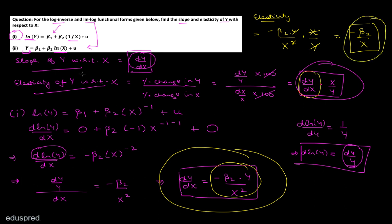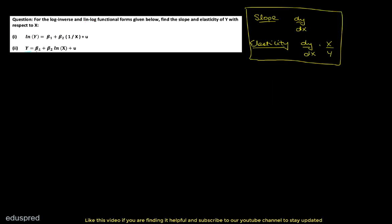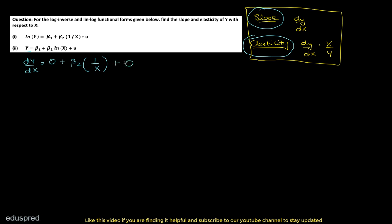Now let's do the same calculation for the second model: y = β₁ + β₂·log(x) + u. Differentiating with respect to x: the differentiation of β₁ is zero, then +β₂, and the differentiation of log(x) with respect to x is 1/x. The differentiation of u with respect to x is zero, since u is unrelated to the independent variable log(x) and therefore also unrelated to x. So the slope of y with respect to x is β₂/x.